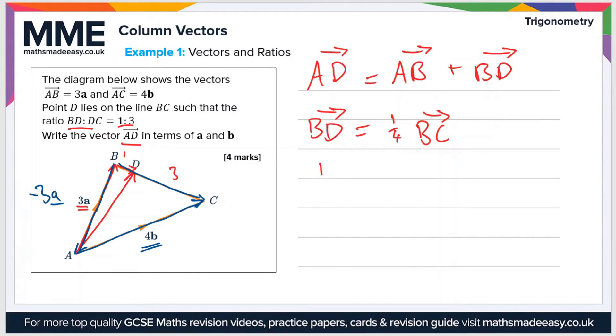So we can say that BC is equal to minus 3a plus 4b. So going back then to our expression for BD, we now have an expression for BC that we can substitute in.